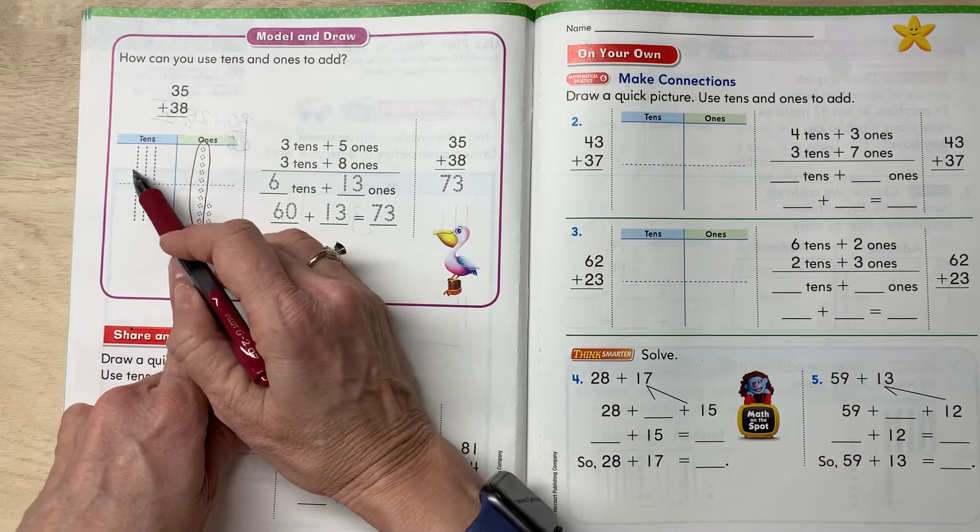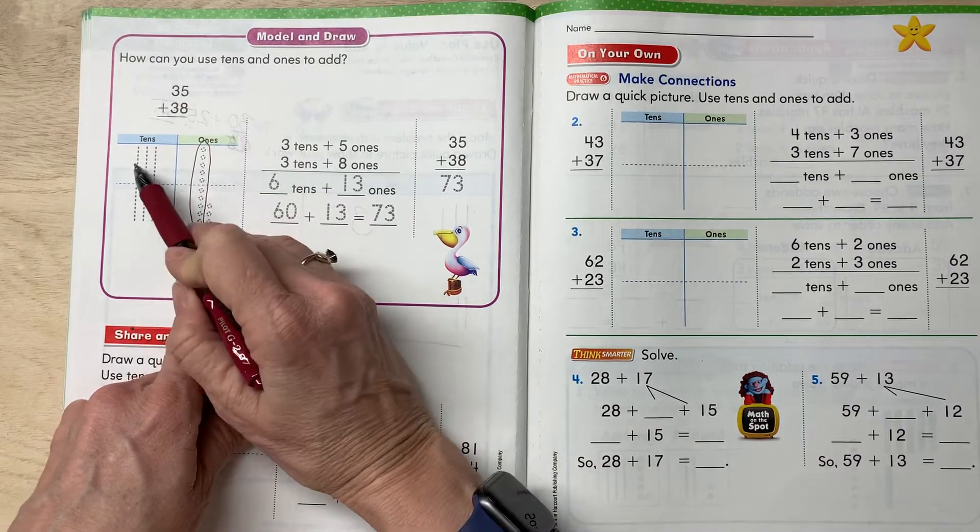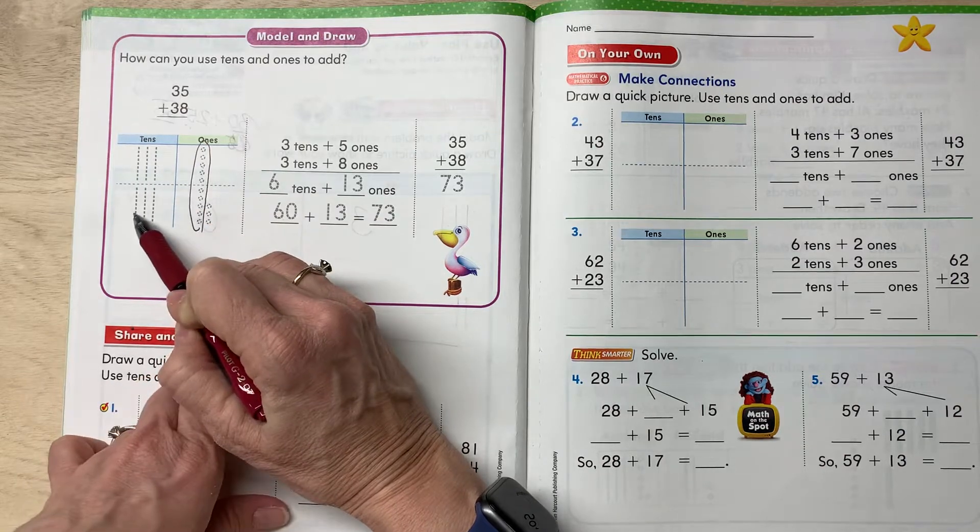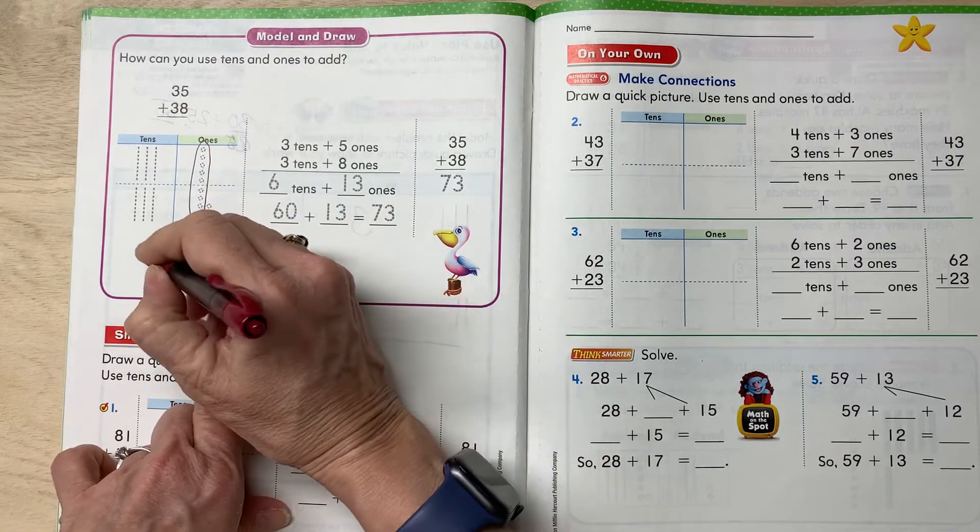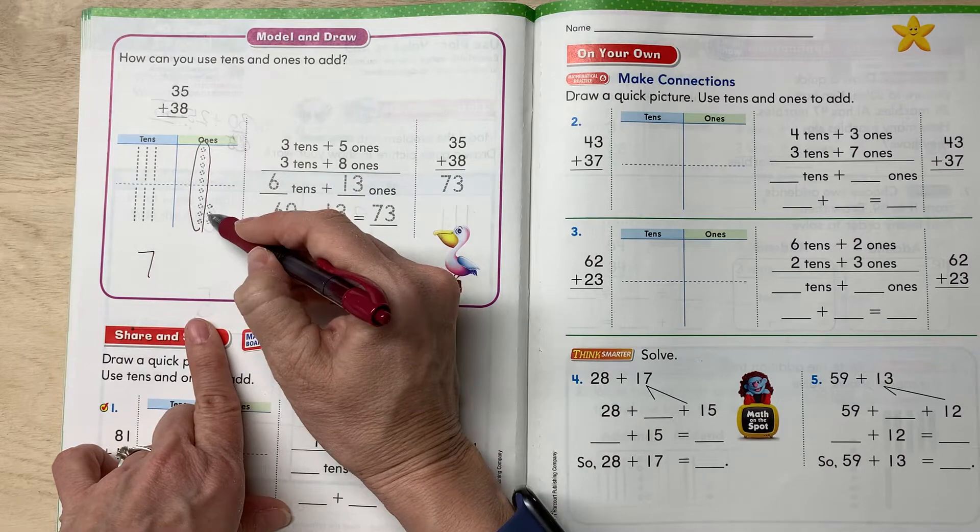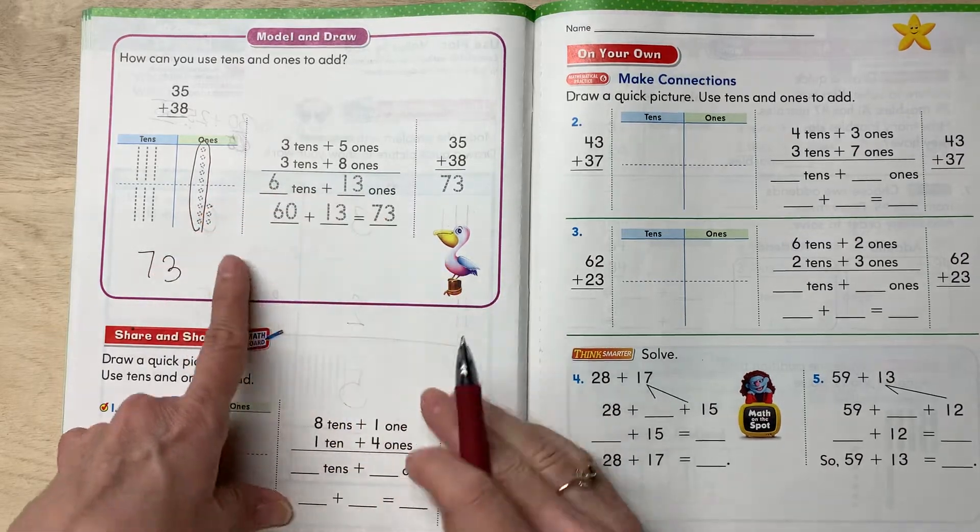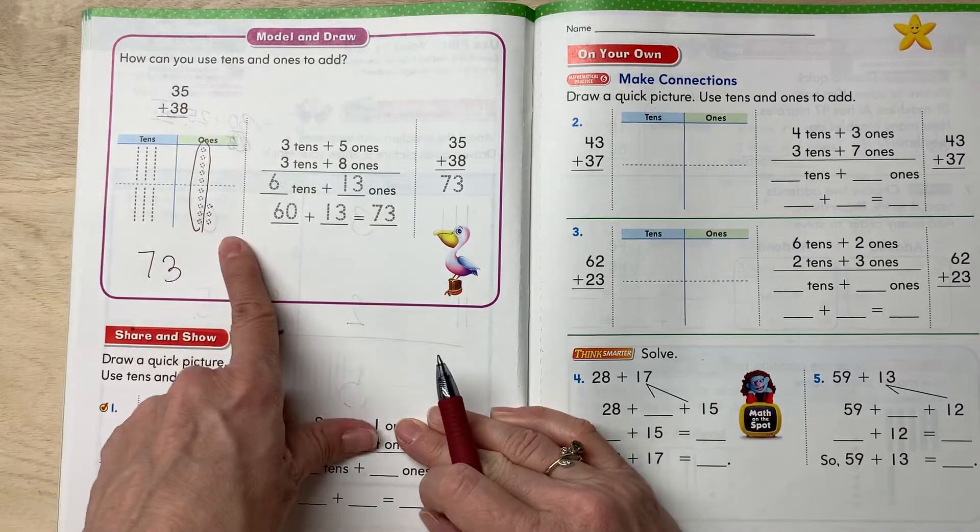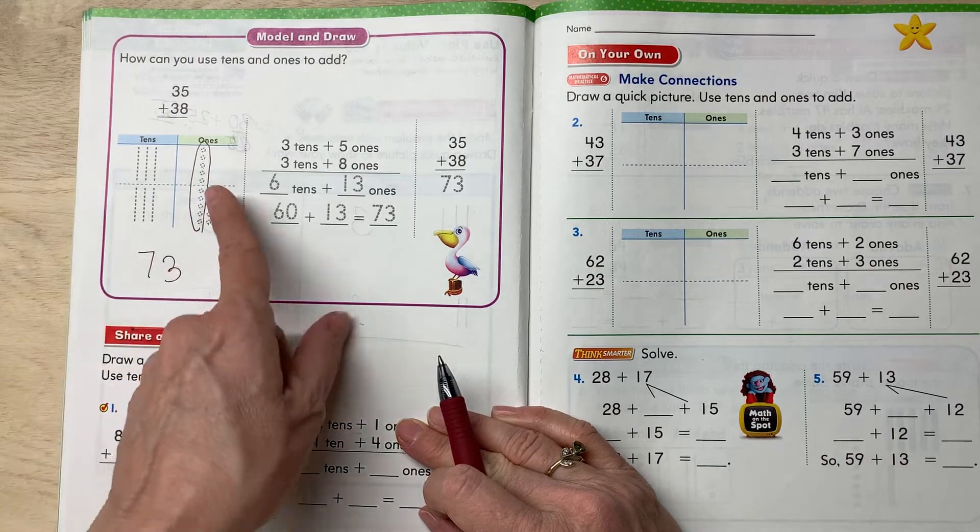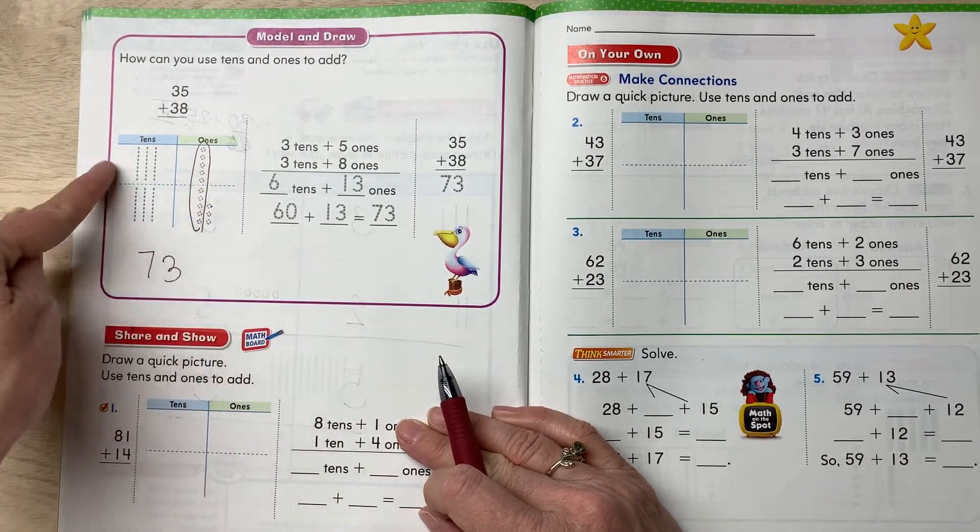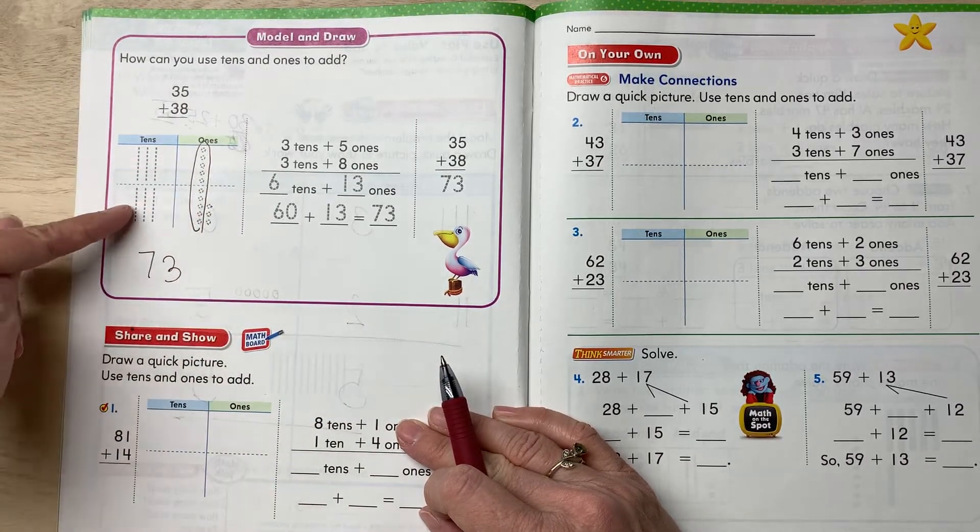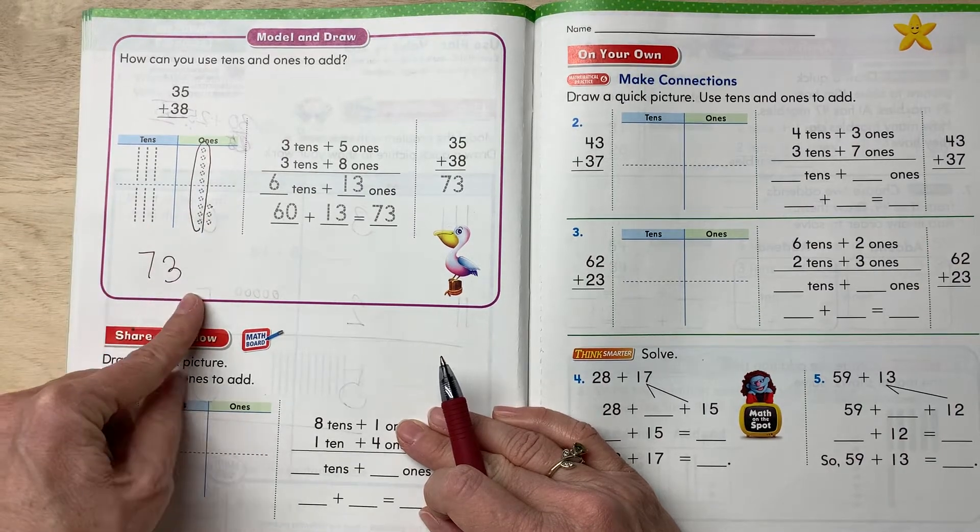And then you add them together. So I have how many tens all together? One, two, three, four, five, six, seven, seven tens, and one, two, three ones. Now this is in case you have more ones and you have enough to make a new ten. You have to kind of move that ten over here. So this is no longer six tens. This becomes seven tens or 73.